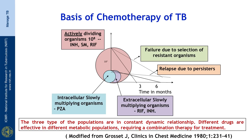In terms of rate of kill, it is rifampicin which kills faster. When it comes to the intracellular slowly growing bacteria — which exists in an acidic pH — the drug most effective is pyrazinamide. When it comes to the slowly persisting, slowly dividing bacteria, it is INH and rifampicin which are most effective.